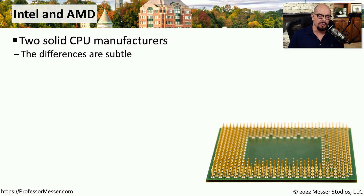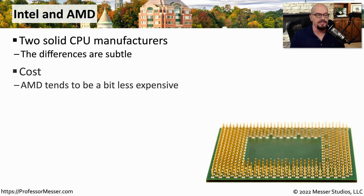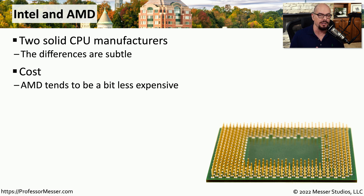If you're building your own computer, one of the first decisions you'll need to make is whether this will be an Intel-based motherboard or an AMD-based motherboard. These are two very popular CPU manufacturers, and all of the other systems on your motherboard will be based around this decision. This decision might be based on the cost of the motherboard and the CPU. Some combinations of motherboards and CPUs are different depending on whether they are Intel-based or AMD-based, and sometimes the most inexpensive device is the one that generally wins.